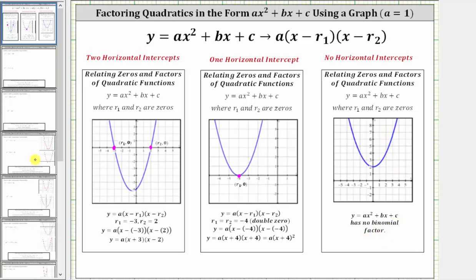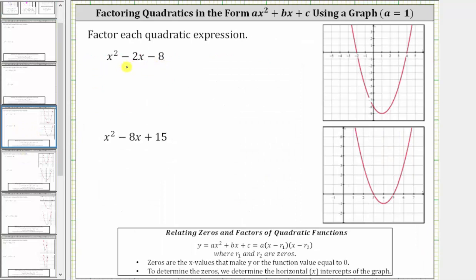Going back to our examples, to factor x squared minus two x minus eight by analyzing a graph, we need to graph y equals x squared minus two x minus eight. I've already provided the graph here on the right, but let's graph this on the TI-84 and review how to find the horizontal intercepts on the graphing calculator.